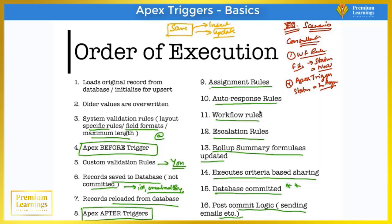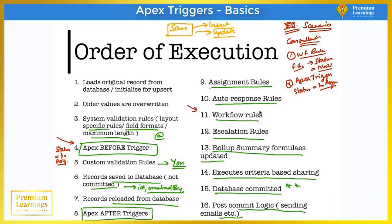What will happen when the record is saved? According to the order of execution, the before trigger fires first and sets the status to 'In Progress'. After that, the workflow rule fires and overrides the value, setting status to 'New'. So when you finally view the record, the value of the status field will be 'New'. To answer this question, you must know exactly how the order of execution works.